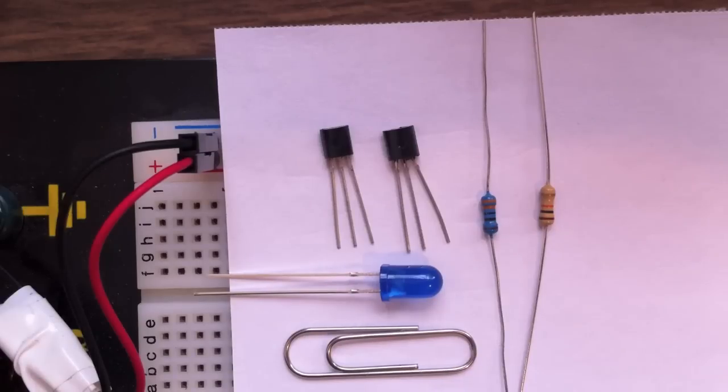The parts I'll be using are two NPN transistors that will act as a Darlington pair, and one blue LED.